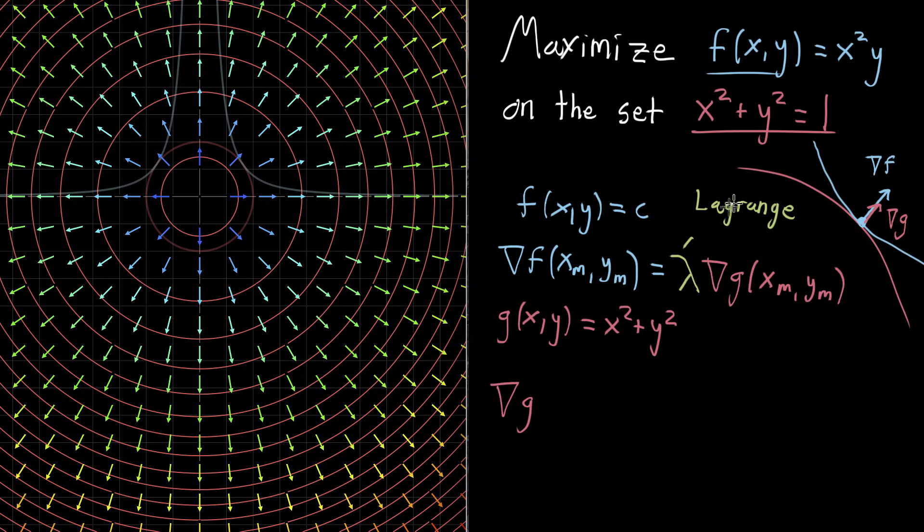Lagrange was one of those famous French mathematicians. I always get him confused with some of the other French mathematicians at the time, like Legendre or Laplace. There's a whole bunch of things. Let's see, multiplier.